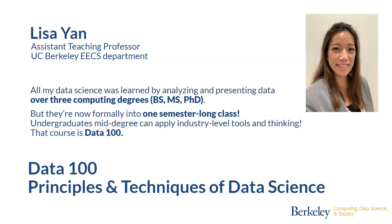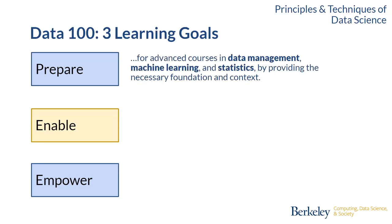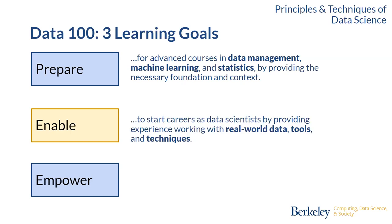If I think about this name, Principles and Techniques of Data Science, what does that allow students to do? We can talk about the learning goals, and I like to categorize them into prepare, enable, and empower. Data 100 prepares students for advanced courses in data management, machine learning, and statistics. It enables students to start careers as data scientists and researchers with real-world tools and data. And finally, empowering, by allowing students to apply their computational and inferential thinking to real-world problems, we prepare them for their future.